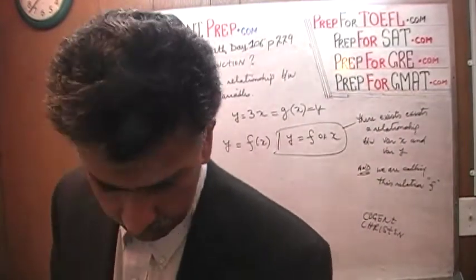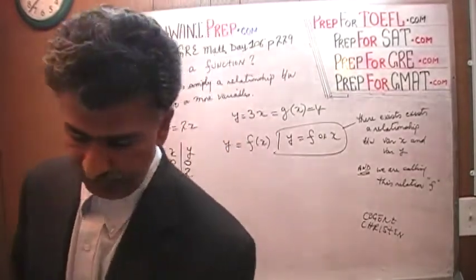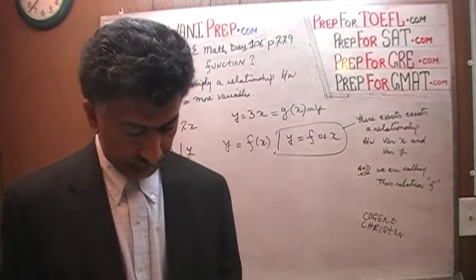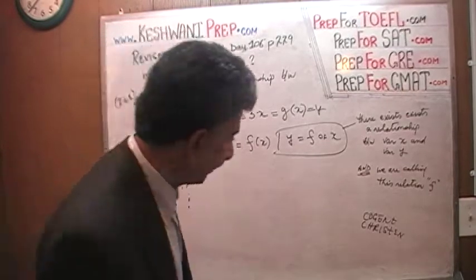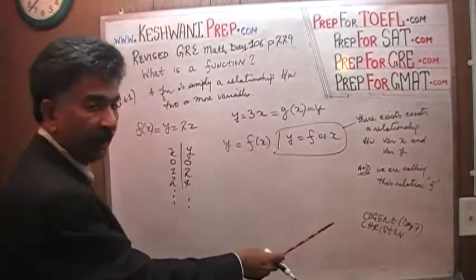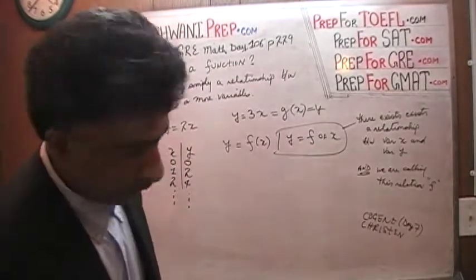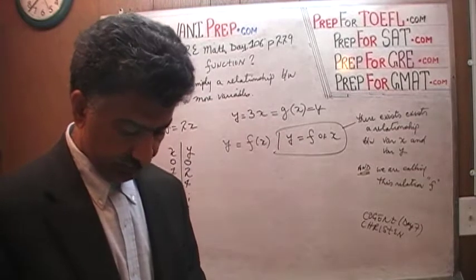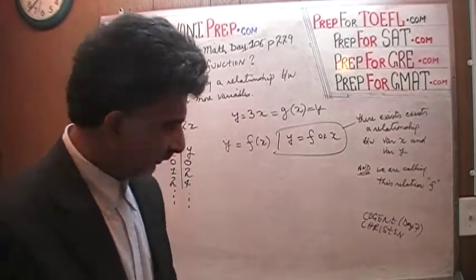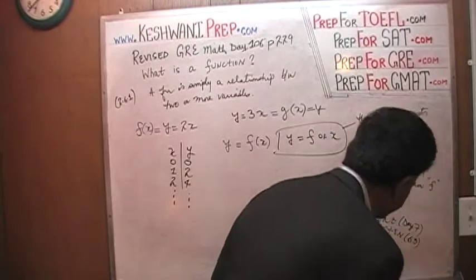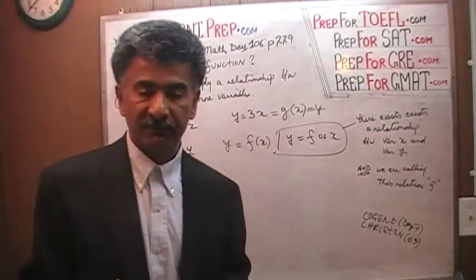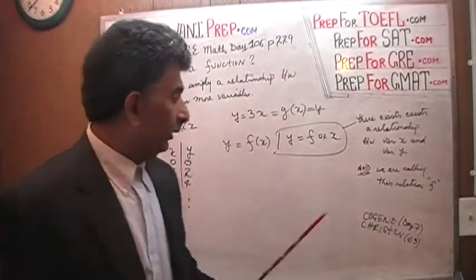Let's learn two vocabulary words. 'Cogent' means persuasive and convincing — you can find it in my vocabulary video, Day 7. 'Christened' — covered in Day 63 — literally means to baptize someone, but metaphorically it simply means to give somebody a name. So we christened this relationship; we called it f.